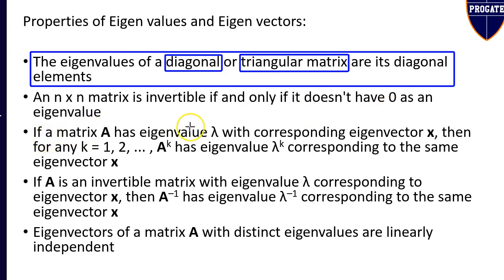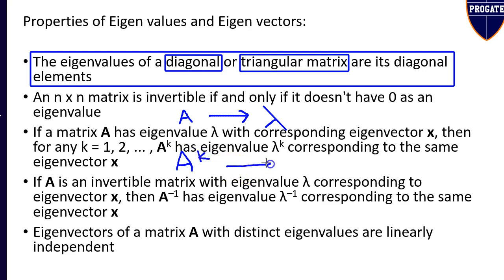Property 3: if a matrix A has eigenvalue lambda and corresponding eigenvector x, then the eigenvalue of A to the power k is lambda to the power k, where k can take any value from 1, 2, 3 to infinity. Likewise, if a square matrix A has eigenvalue lambda, then A inverse has eigenvalue lambda to the power minus 1, or 1 over lambda.